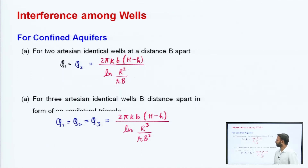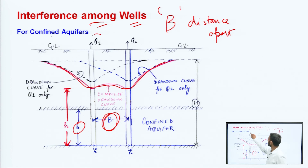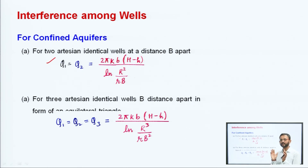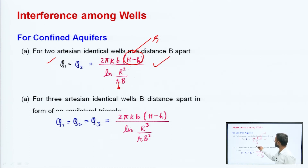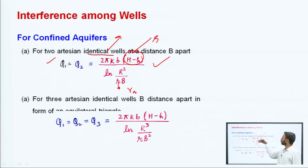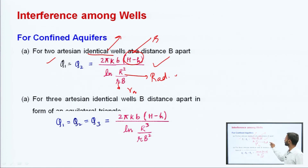For two identical artesian wells at a distance b apart in a confined aquifer, q1 equals q2 and is given by: q = 2πkb(H − h) / ln(R² / (r × b)), where r is the radius of the well and R is the radius of influence. Both wells have the same discharge. Here b is the spacing between the two wells and the formula uses R squared upon r times b inside the logarithm.